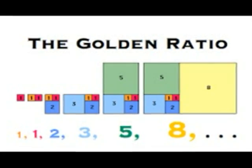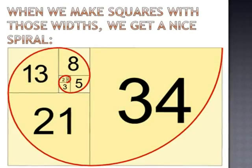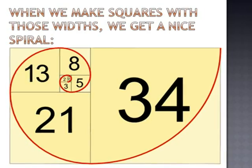If we take these numbers and use them as the side lengths of squares and combine those squares, we get a nice spiral.